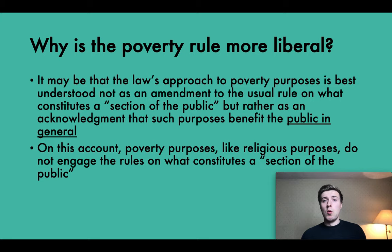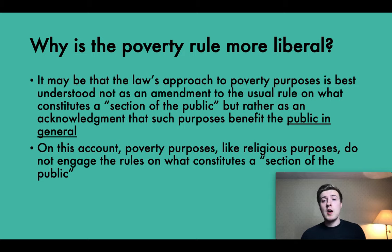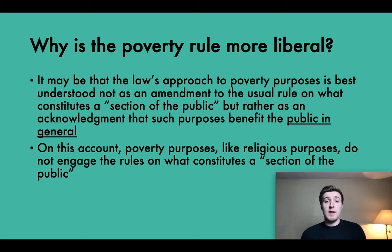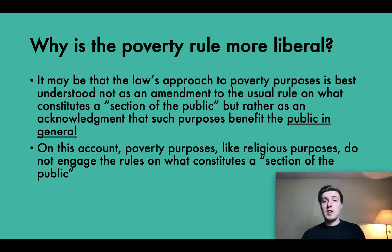So why is the poverty rule more liberal than the usual rule? It may be that the law's approach to poverty purposes is best understood not as an amendment to the usual rule on what constitutes a section of the public, but rather as an acknowledgement that such purposes benefit the public in general. Any purpose relieving or preventing poverty lifts the burden of providing such relief from the state, who would otherwise have to act. This in turn reduces taxes to the benefit of all taxpayers, and in this way the benefit extends to the tax-paying public. On this account, poverty purposes — like religious purposes — do not engage the rules on what constitutes a section of the public, because their benefit extends to the public in general.